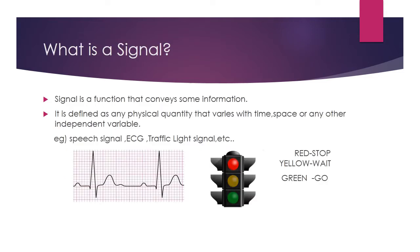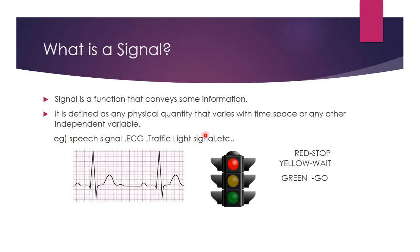First, we are going to see what is a signal. A signal is a function that conveys some information. If you are getting some information from it, then it is called a signal. That function varies with respect to time, space, or any other independent variable.